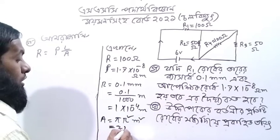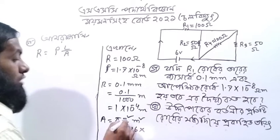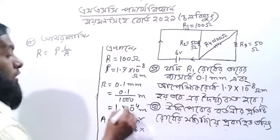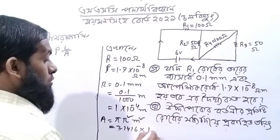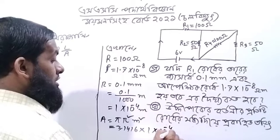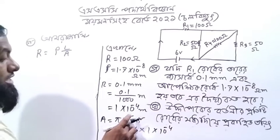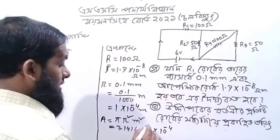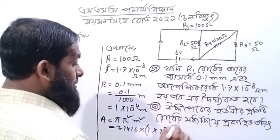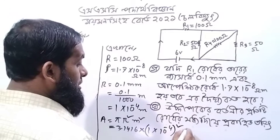3.1416 into r minus 1, 1 into 22 minus 4. A equal to lira square. B v square, a equal to pi r square.